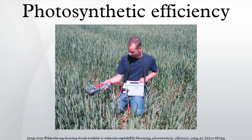24% is lost due to wavelength mismatch degradation to 700 nanometer energy, leaving 28.2%; 32% efficient conversion of ATP and NADPH to D-glucose, leaving 9%; 35–40% of sugar is recycled and consumed by the leaf in dark and photorespiration, leaving a net leaf efficiency of 5.4%.